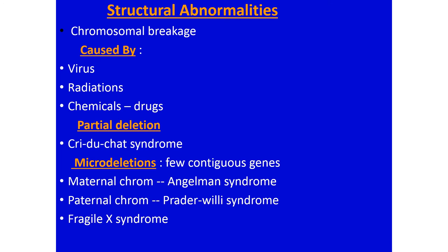Structural abnormalities may be caused by chromosomal breakage due to different viruses, radiation, chemicals, or drugs. Partial deletion leads to a syndrome called Cri du Chat. Micro-deletion affects a few contiguous genes. If the maternal chromosome 15 is involved, it is called Angelman syndrome; if the paternal chromosome 15 is involved, it is called Prader-Willi syndrome. Another example of structural abnormality is Fragile X syndrome.